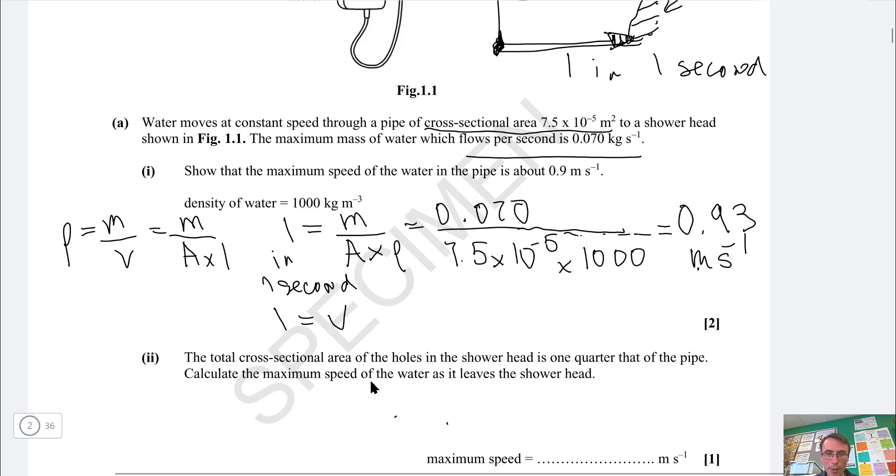Next, the cross-sectional area of the holes in the shower head is one quarter that of the pipe. Calculate the maximum speed of the water as it leaves the shower head. We can see that the speed is inversely proportional to the area. If m and the density are constant but the area decreases by a quarter the speed will increase by a factor of four.